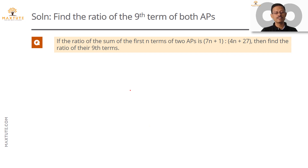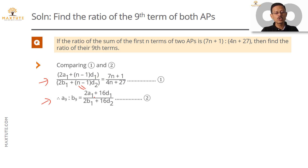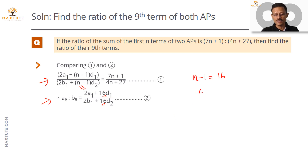Comparing Equation 1 and Equation 2: Equation 1 has (2A1 + (n−1)D1) / (2B1 + (n−1)D2), and Equation 2 has (2A1 + 16D1) / (2B1 + 16D2). The 2A1 and 2B1 terms match. Comparing the D coefficients, (n−1) corresponds to 16, so n−1 = 16, meaning n = 17. We've deduced that n = 17.